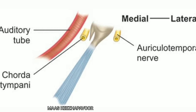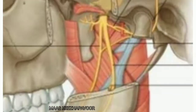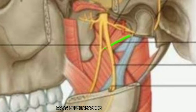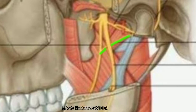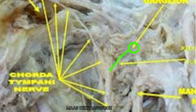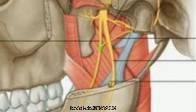After traversing the medial aspect of the spine of the sphenoid, the nerve runs deep to the lateral pterygoid muscle. Two centimetres below the skull, it joins with the lingual nerve from behind at an acute angle in the infratemporal fossa.